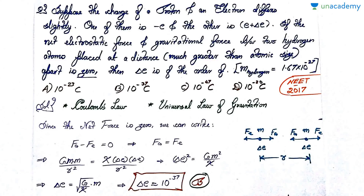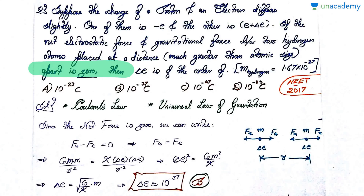The first question is: suppose the charge of a proton and an electron differs slightly — one of them is minus E and the other is E plus delta E. If the net electrostatic force and gravitational force between two hydrogen atoms placed at a distance much greater than atomic size apart is zero, then delta E is of the order of — it's a very conceptual question. Pause the video and attempt it.